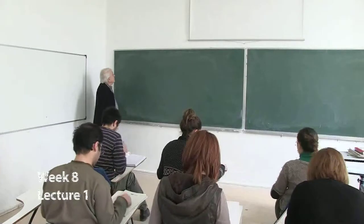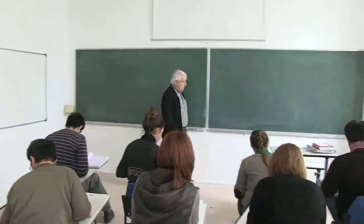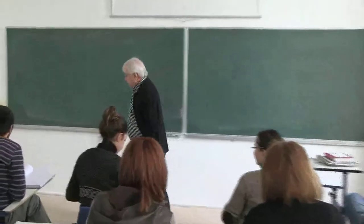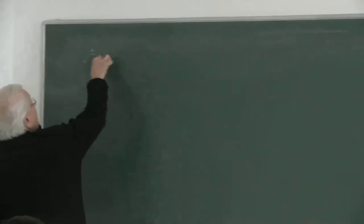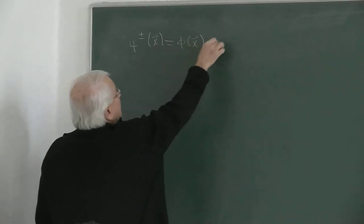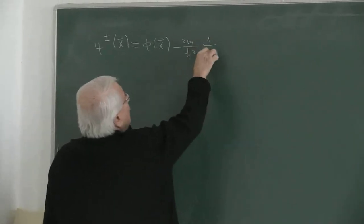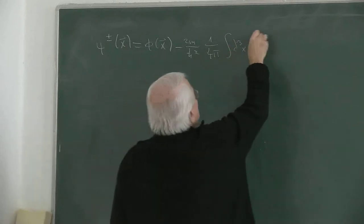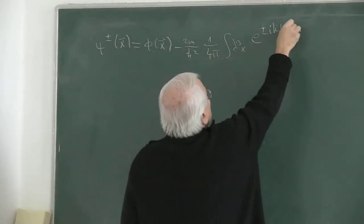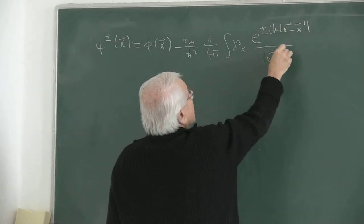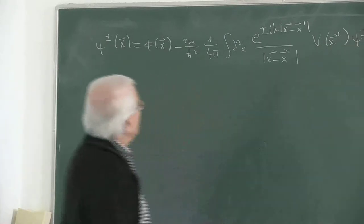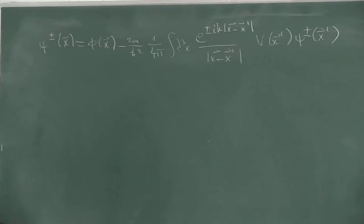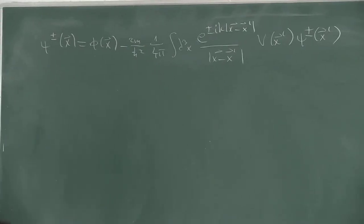The Scattering Theory. Last time we started discussing the scattering theory — quantum scattering theory — and we obtained an equation called the Lippmann-Schwinger equation. Let me go back to that: (1/4π) ∫d³x' e^{±ik|x−x'|} / |x−x'| · V(x') ψ±(x'). This was an exact form and we constructed the Green's function explicitly using sophisticated theorems from complex analysis — specifically, the Cauchy theorems.